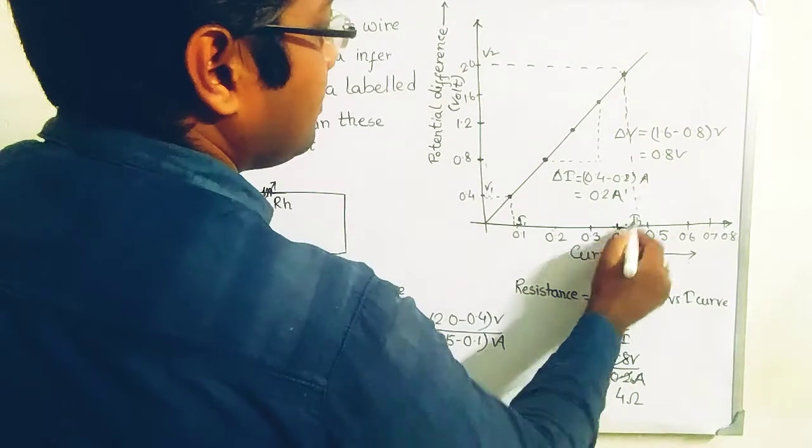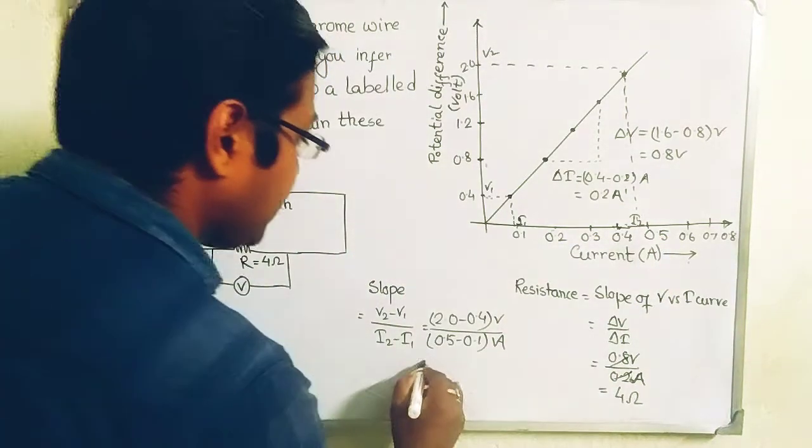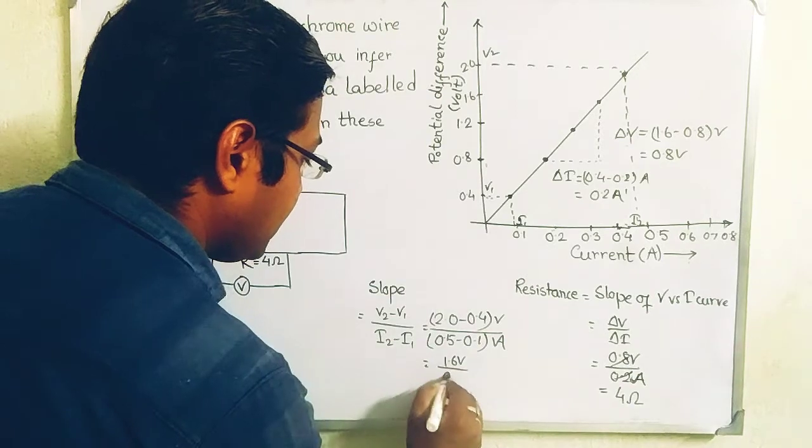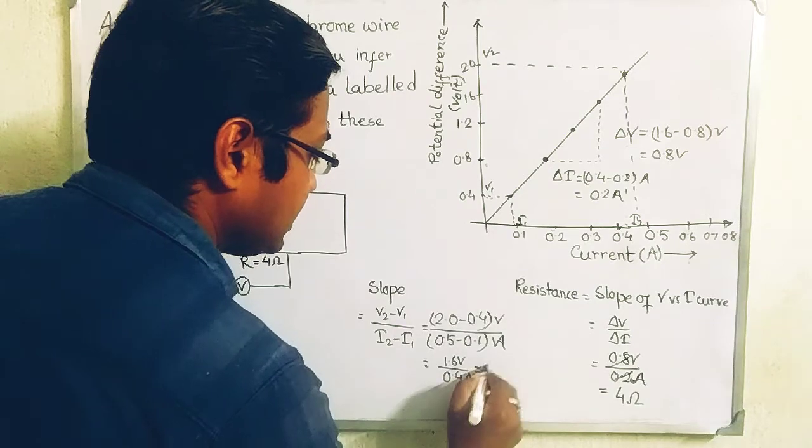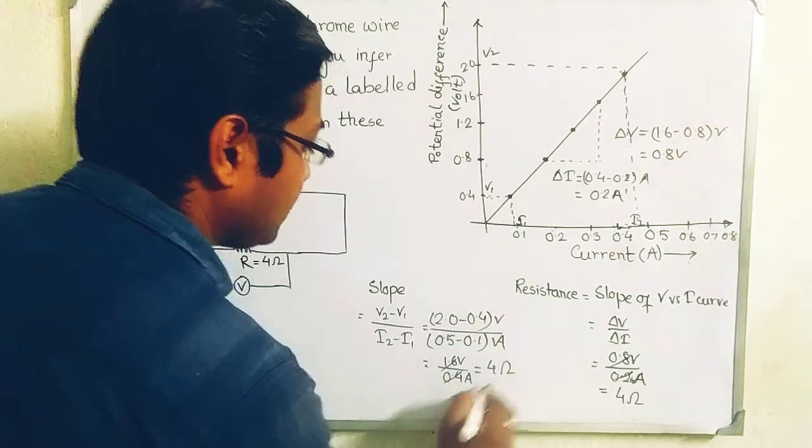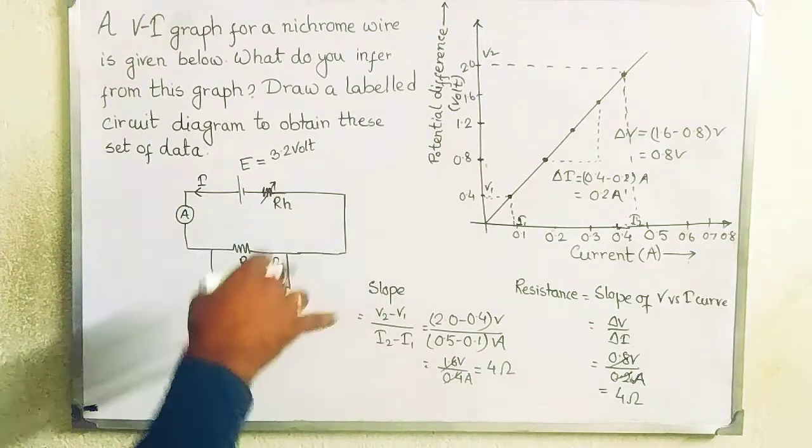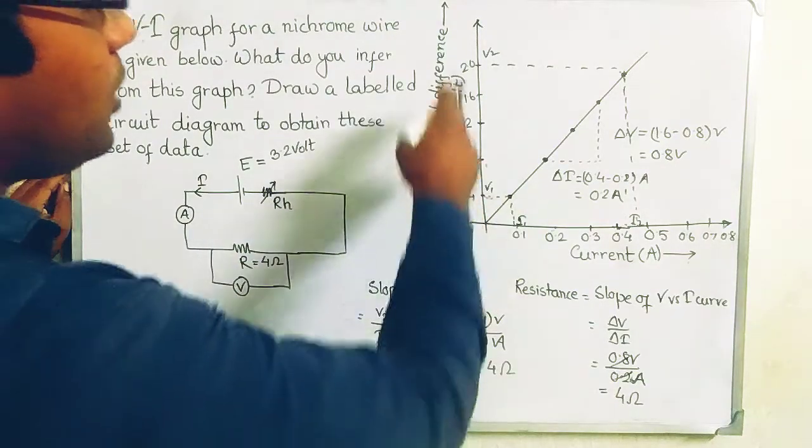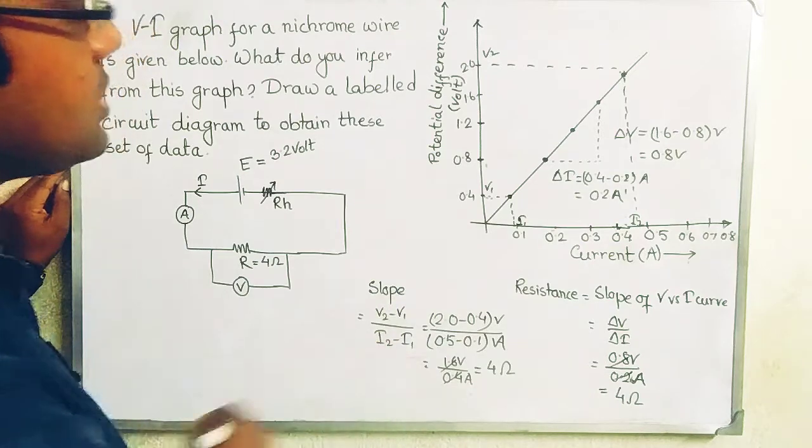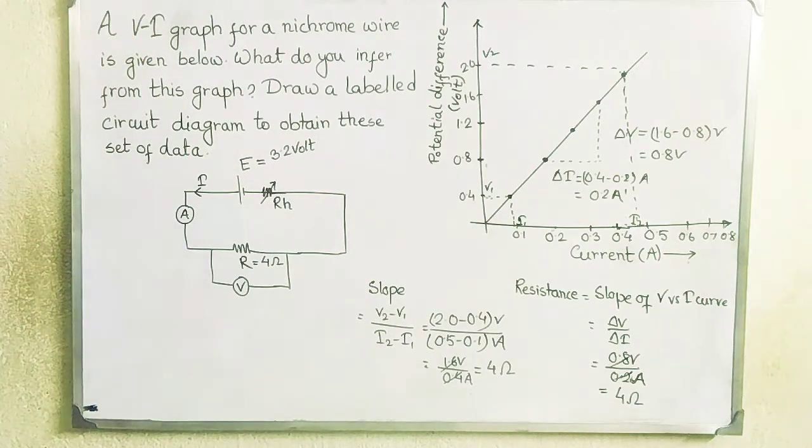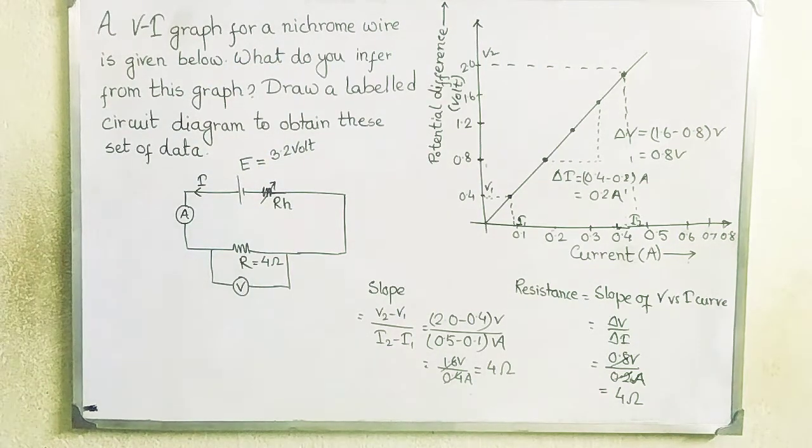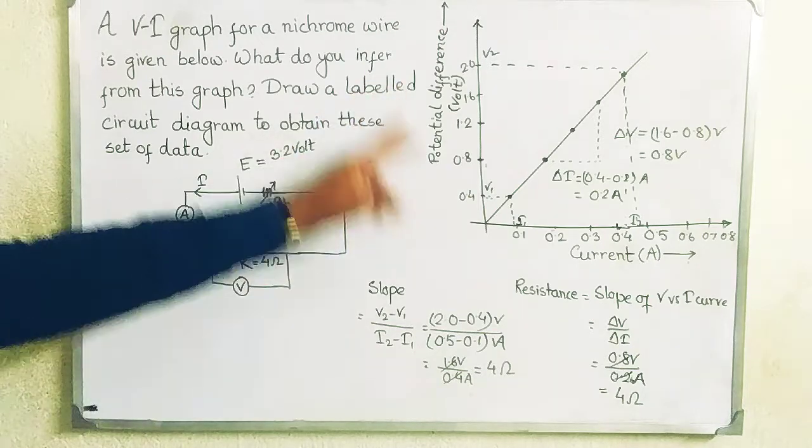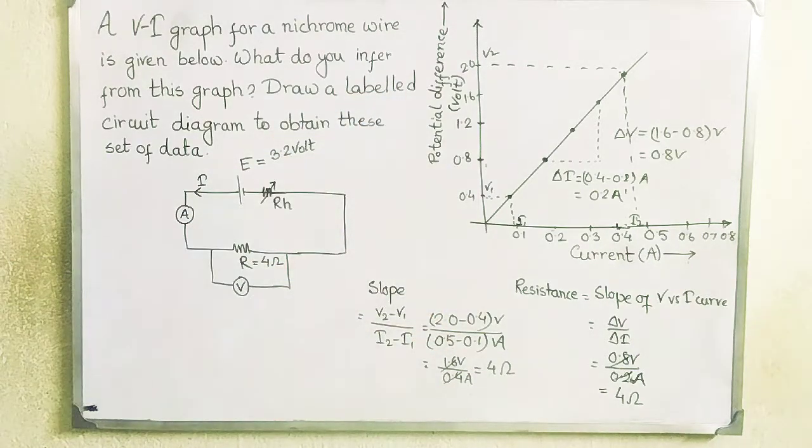If it is drawn in scale properly, then obviously it will meet here 0.5. So it will be 1.6 volt divided by 0.4 ampere. The resistance is obviously, if you do the calculations, it will again give you 4 ohm. There are two procedures I have shown to calculate the slope of this linear curve, potential difference versus current curve. The nichrome wire that is connected here has resistance 4 ohm. And this is the circuit diagram to obtain the data of the current and the potential difference across it. Thank you all of you.